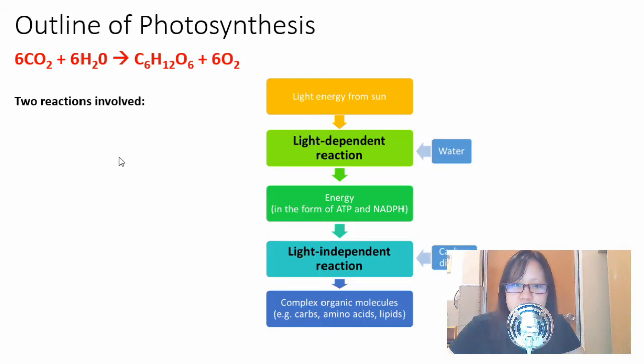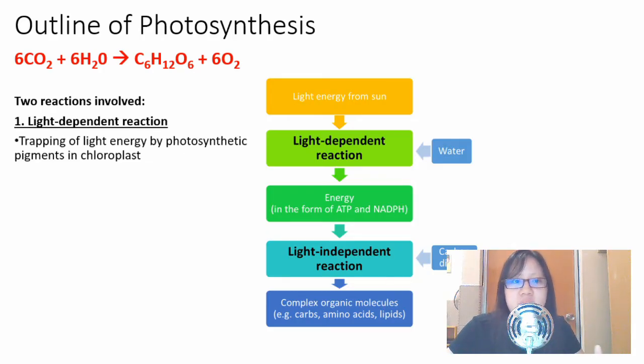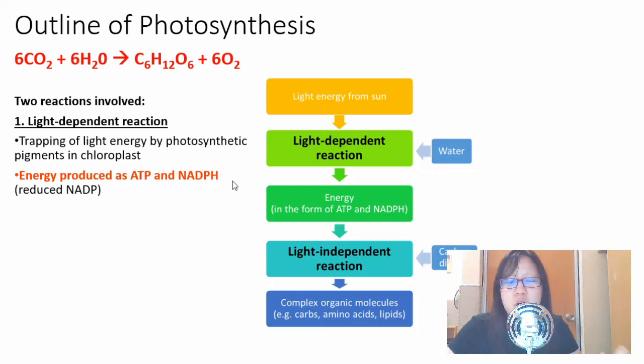Two reactions are involved. The light dependent reaction obviously needs light and this is trapped in the photosynthetic pigments in the chloroplast. Energy is produced during this reaction as ATP and NADPH. This is where you will talk about the electron transport chain and things like that which we'll go into detail later.